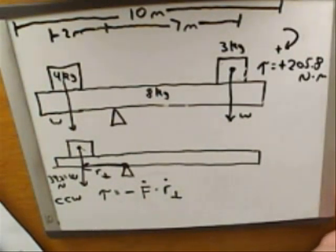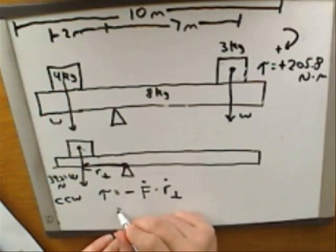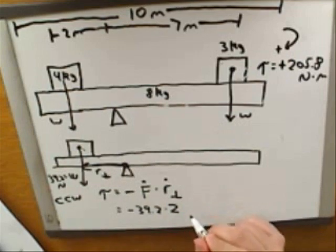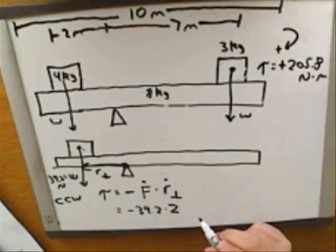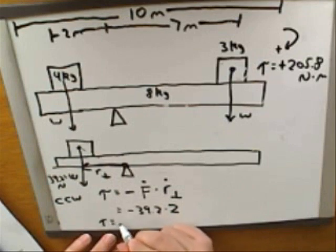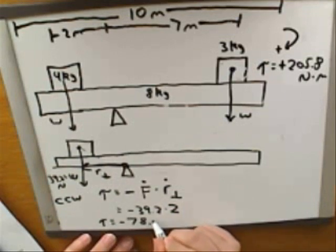So that's going to equal negative three, thirty nine point two times two meters. Good, so it'll be negative seventy eight point four newton meters.